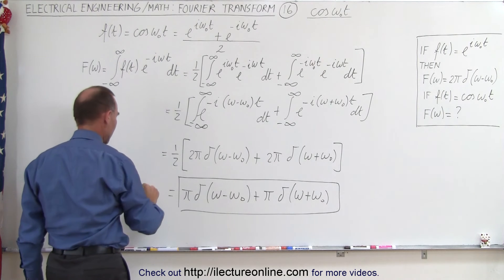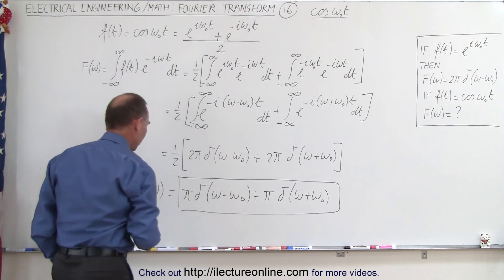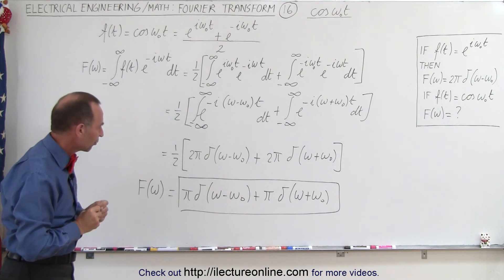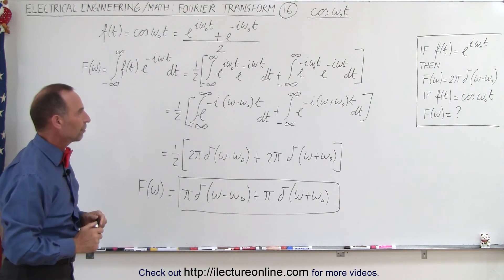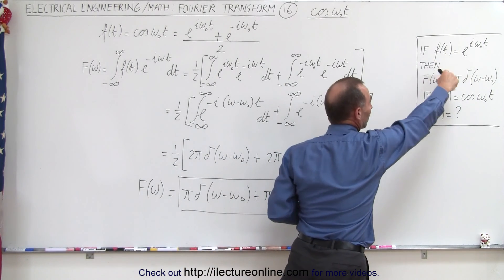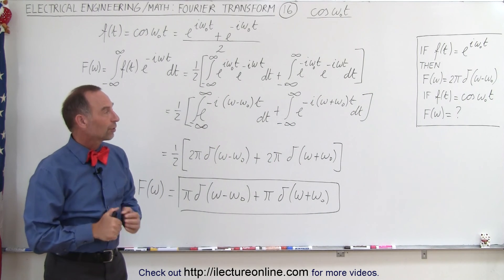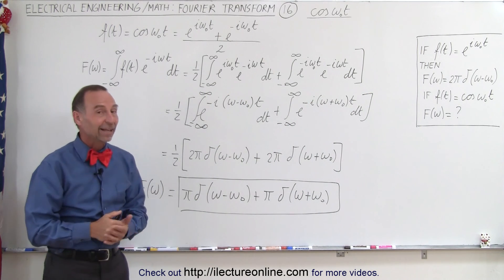This becomes the Fourier transform of that particular input function. Once we understand this relationship, it's very easy to derive the Fourier transform of cos(ωt). And that's how it's done.